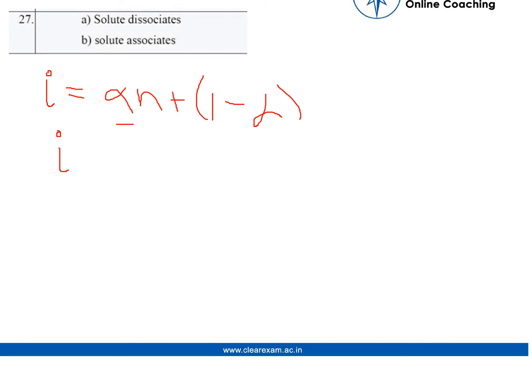So if in the first part we are given that i is greater than 1, then that means that our whole equation alpha n plus 1 minus alpha is also greater than 1. If we take one to the other side, we will know that alpha n minus alpha is greater than 0. That means that this causes the solute to dissociate.